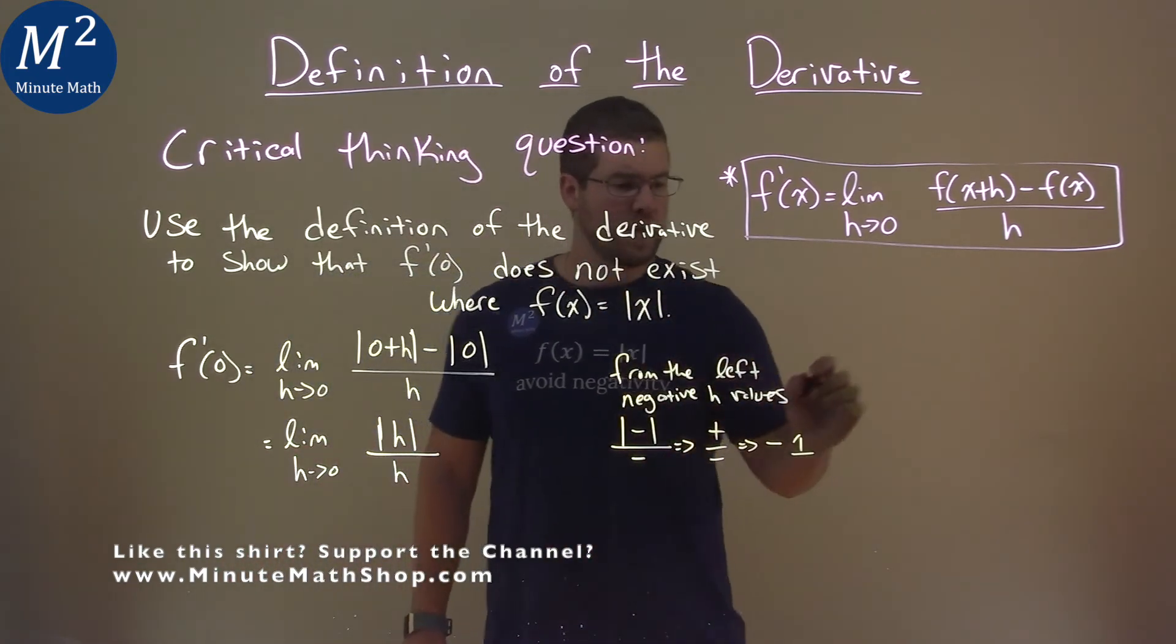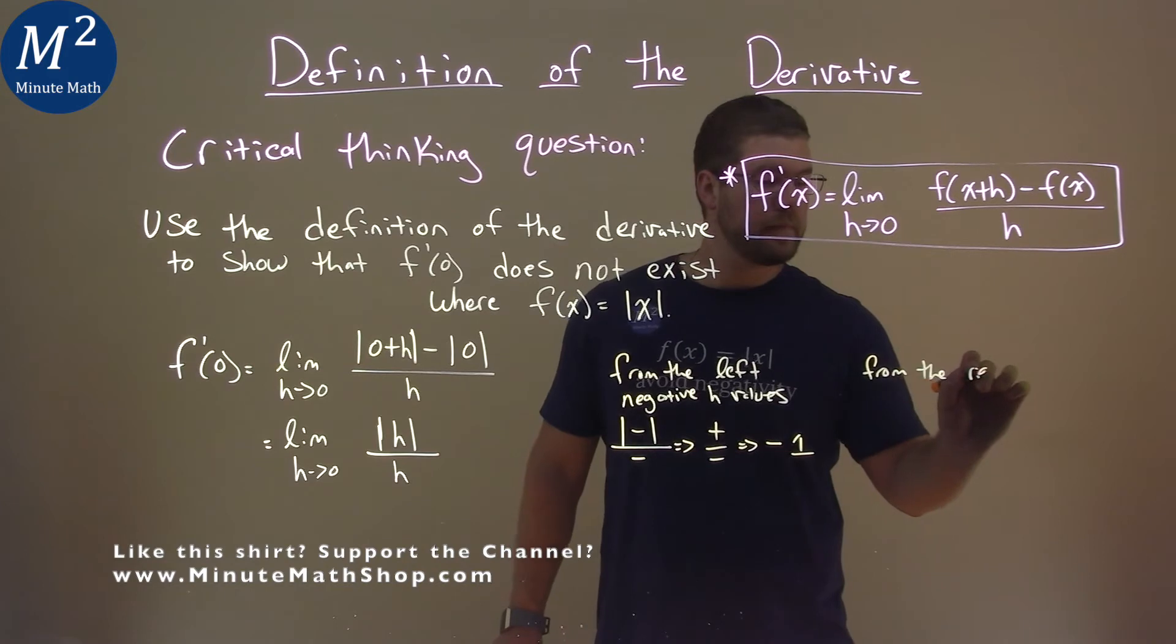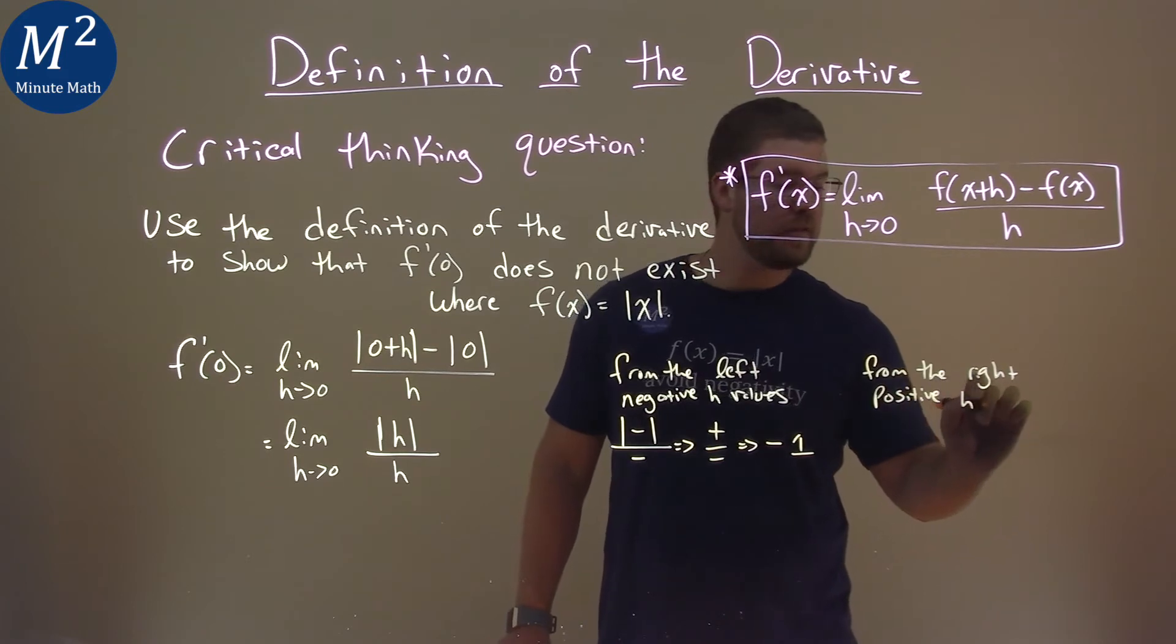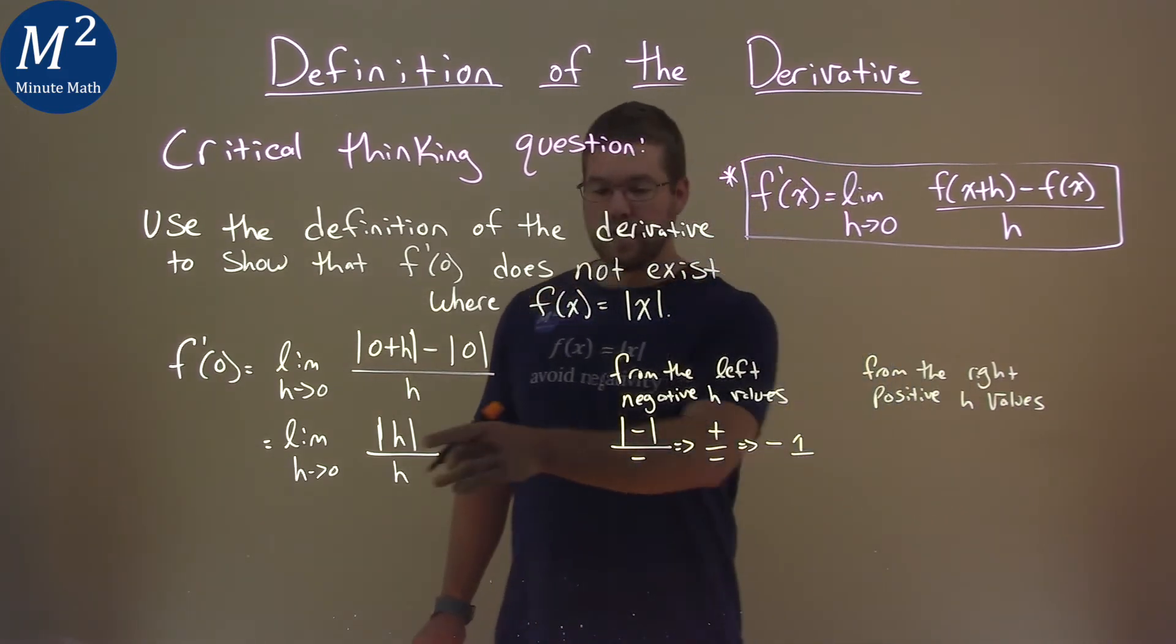What happens if we come from the right? So we have from the right, and we have positive h values. So again, same thing. If we have positive values,